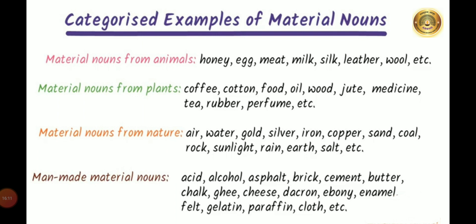Material nouns from plants: coffee, cotton, food, oil, wood, jute, medicine, tea, rubber, perfume, etc. Material nouns from nature: air, water, gold, silver, iron, copper, sand, coal, rock, sunlight, rain, earth, salt, etc. Man-made material nouns: acid, alcohol, asphalt, brick, cement, butter, chalk, ghee, cheese, dacron, ebony, enamel, felt, gelatin, paraffin, cloth, etc.